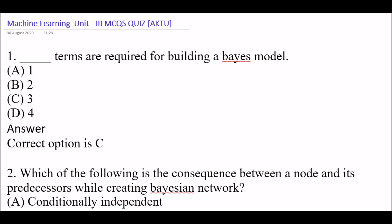Now let's begin. The first question is: blank space — how many terms are required for building a Bayes model? Option A: 1, Option B: 2, Option C: 3, Option D: 4. Right answer is Option C — 3 terms are required for building a Bayes model.